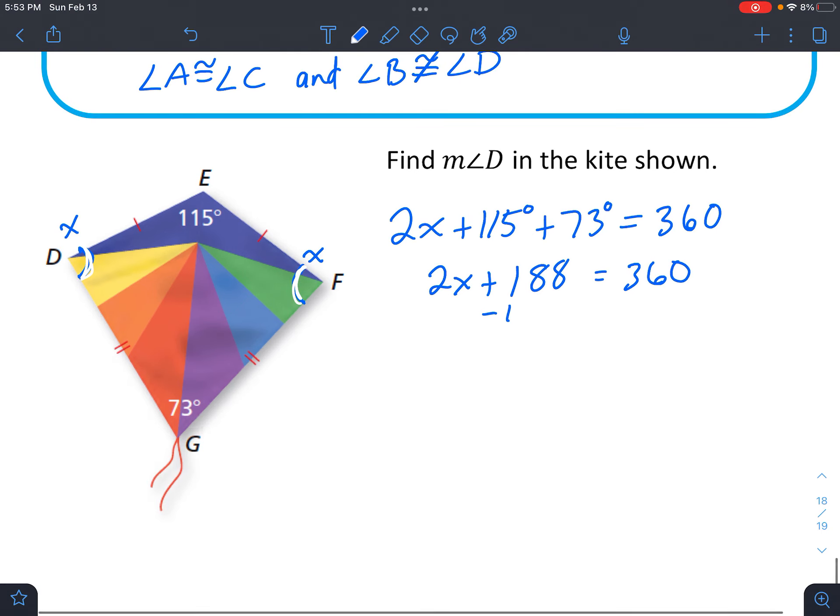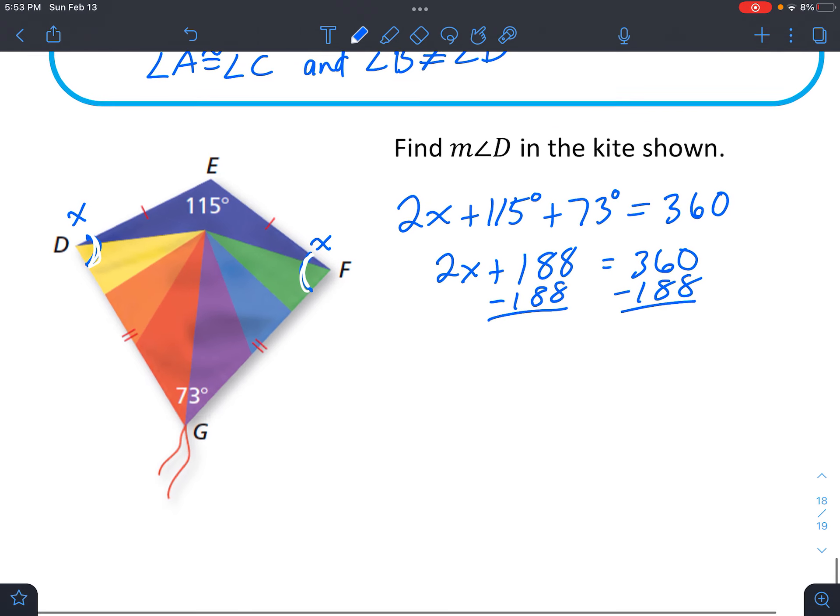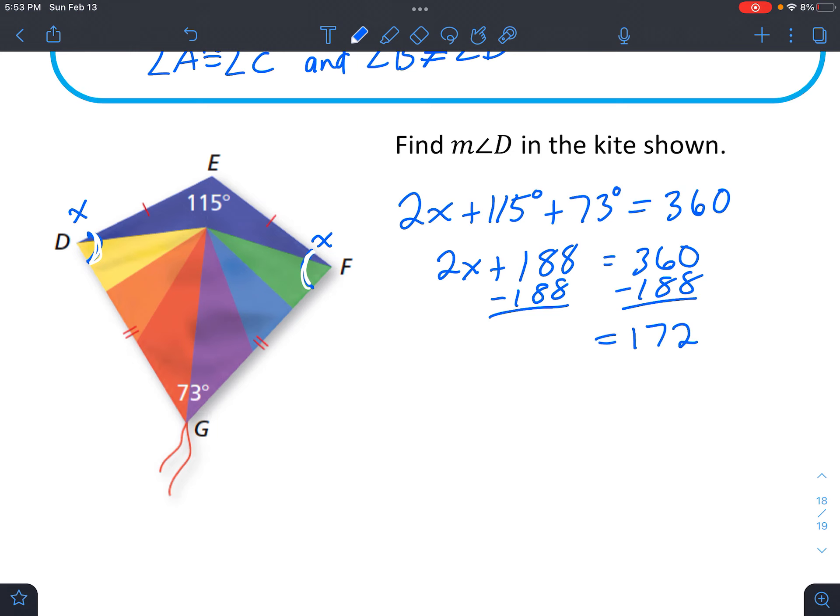And we're just doing some algebra here. You always want to get rid of the number that is not attached to the variable next. This is 172. And definitely if you're feeling uncomfortable with the big numbers, just punch into a calculator. That's what they're there for. Divide both sides by 2, and we get 86 degrees.